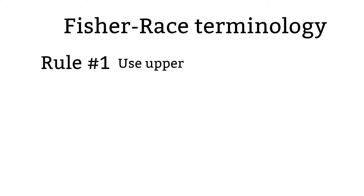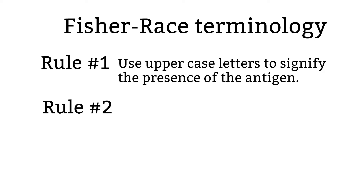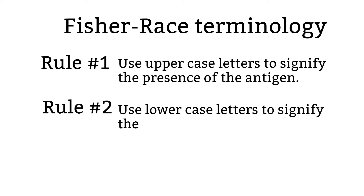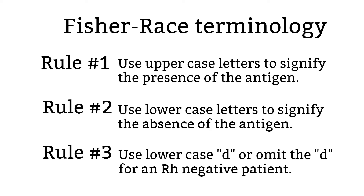First up, Fisher Race. Rule number one: to indicate the presence of the antigen, write the antigen in uppercase. Rule number two: to indicate the absence of an antigen, write the antigen in lowercase. Rule number three: for an RH negative patient, you can choose to write little d or omit the d. When practicing, I suggest you write the little d in place of a big D. However, formally, we do not write the little d to represent the absence of D antigen.